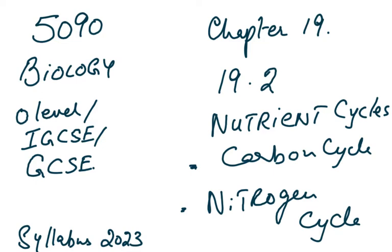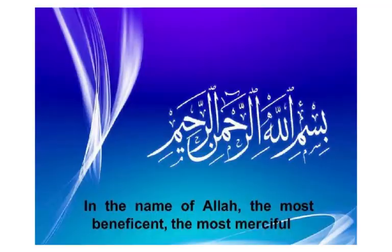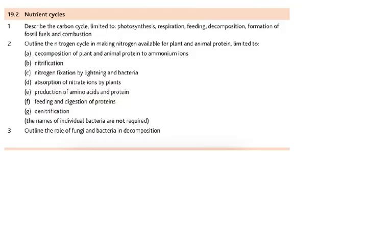Bismillahirrahmanirrahim. We start 5090 chapter 19, section 19.2, which we are going to discuss today: the nutrient cycles, which is the carbon and the nitrogen cycle. In the nutrient cycles we are going to discuss the carbon cycle, including photosynthesis, respiration, feeding, decomposition, formation of fossil fuels, and combustion.